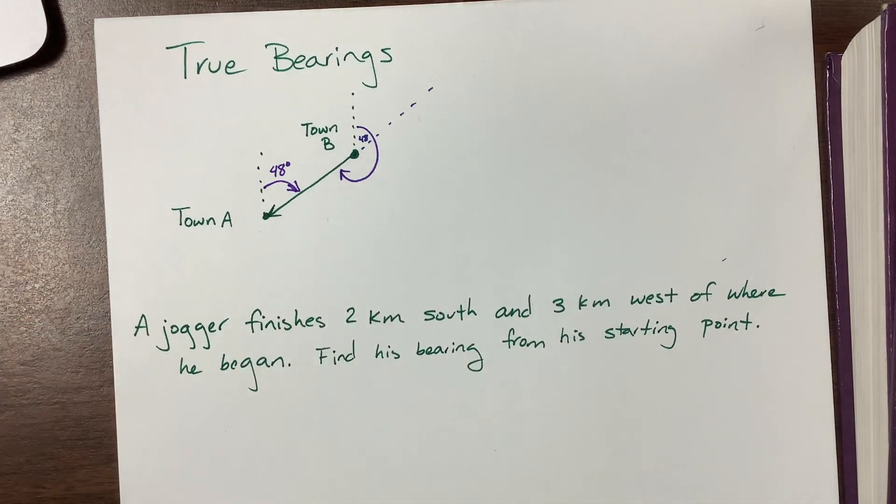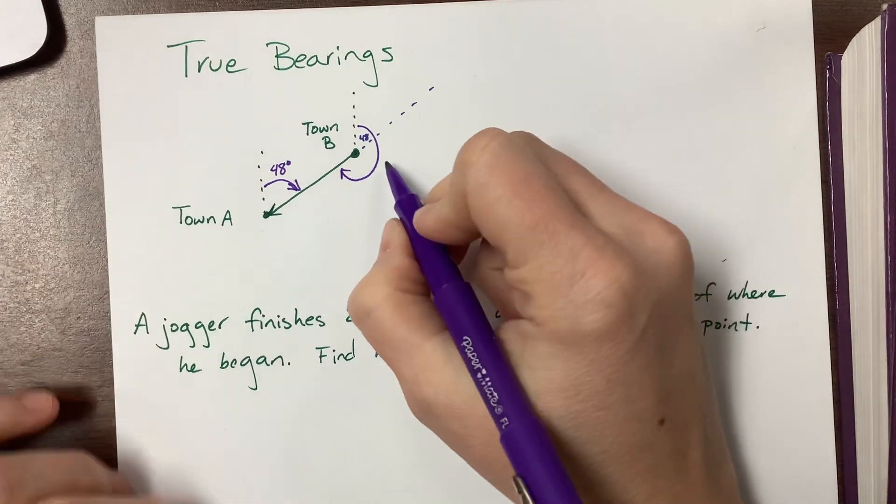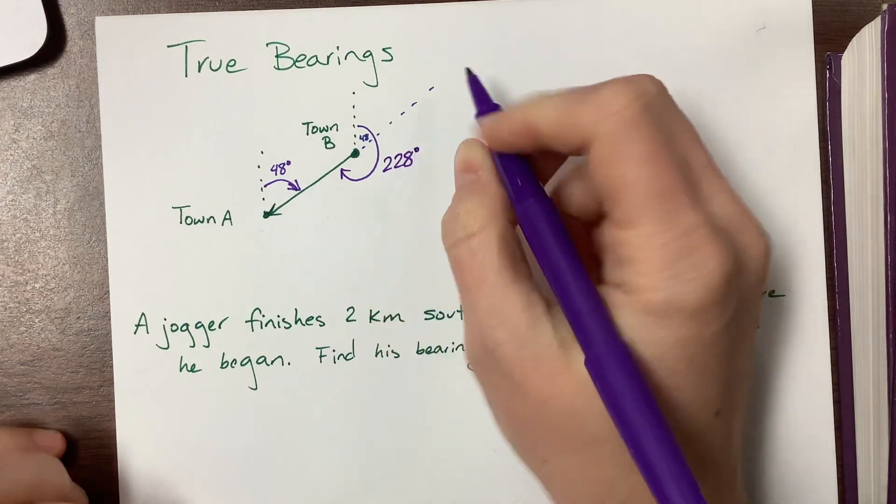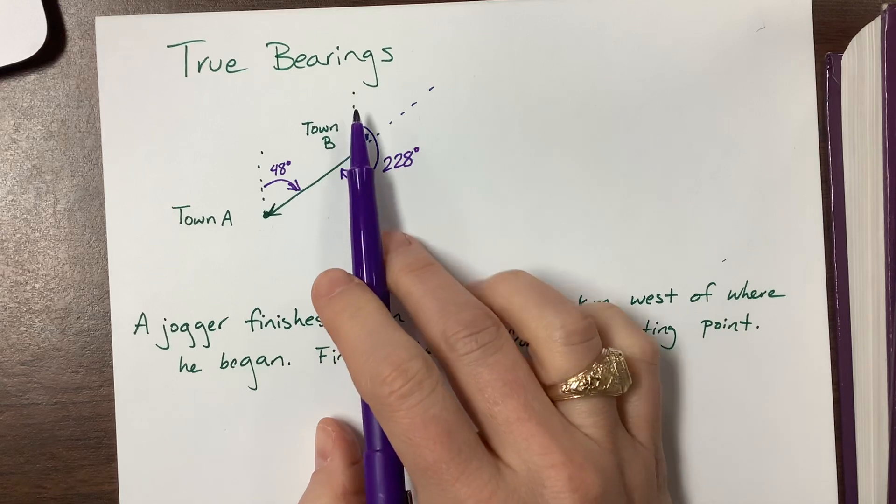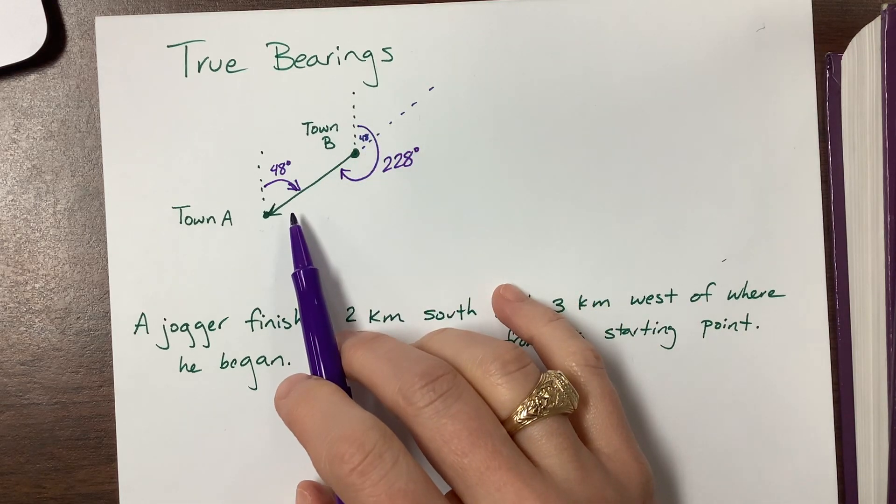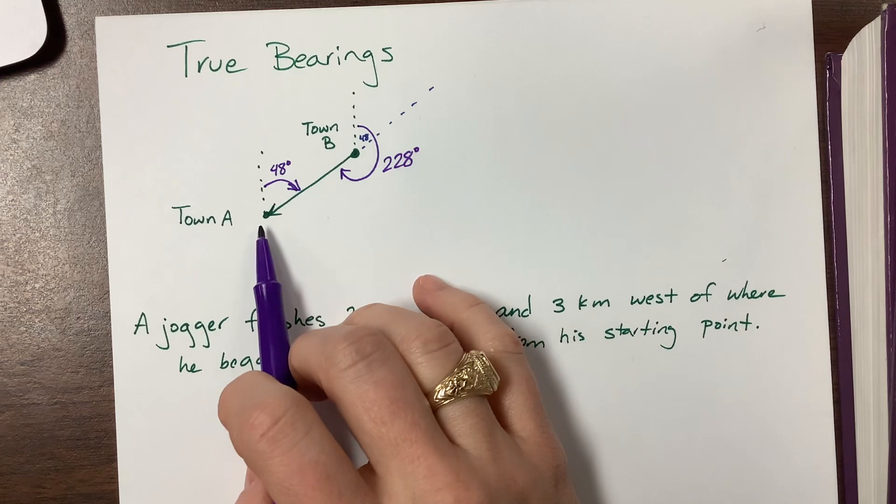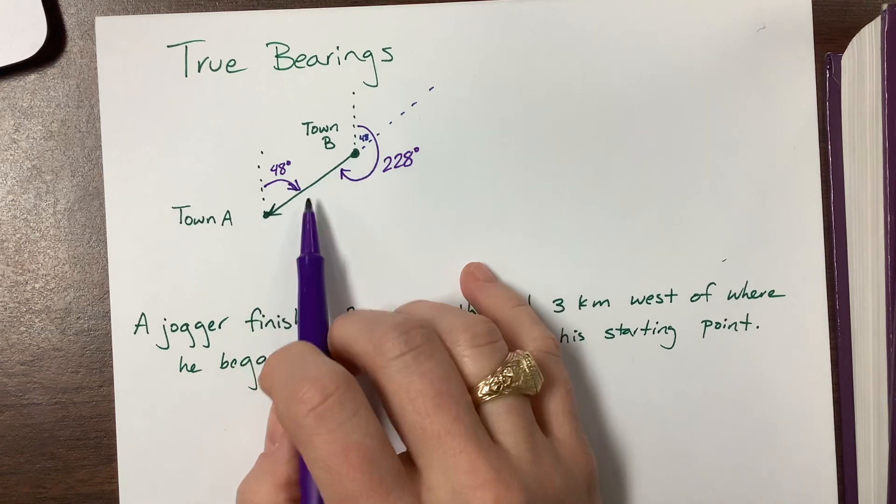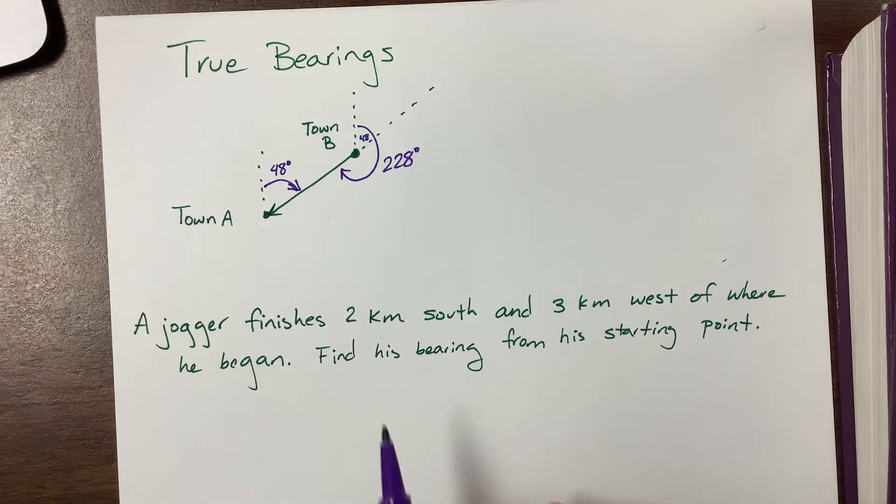What is that? 48 plus 180 is 228. So we'd say that the bearing from town B to town A is 228 degrees. The bearing from town A to town B is 48 degrees, and that's what they mean.